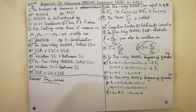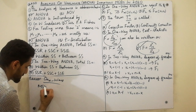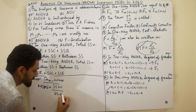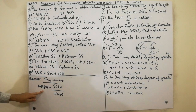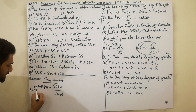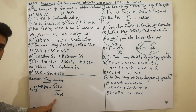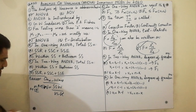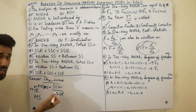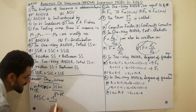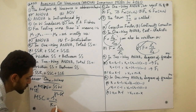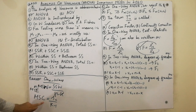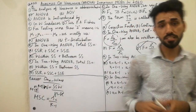To correct a previous mistake: MS Within (or MS Error) equals SSW divided by (n minus k), not k minus one. And MS Columns equals SSC divided by (k minus 1). So MS Error = SSW/(n−k) and MS Columns = SSC/(k−1). Sorry for the earlier mistake.